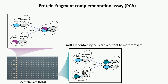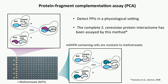Why did we choose the PCA assay? PCA has a similar principle to the yeast two-hybrid system, but instead of two domains of a transcription factor, it fuses the bait or prey genes with fragments. Here we use the DHFR, which can give cells resistance to methotrexate. This assay can detect protein-protein interactions in a physiological setting because we always fuse the fragments with the bait or prey genes in the genome, so they're expressed at their endogenous level and function in their natural cell compartments.